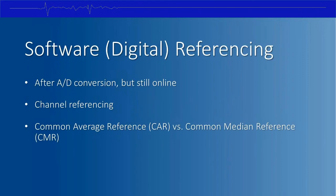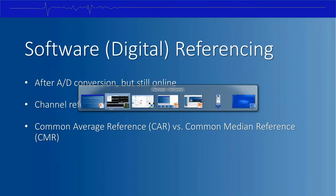The second option is software or digital referencing, applied to the already digitized signal but still online. There are two options: channel referencing, which uses one recording channel as a reference for others — the selected channel should have common artifact but no common signal of interest; and common average referencing (CAR) or common median referencing (CMR), which uses the average or median of a group of channels as the reference. Let's jump into Plex Control.